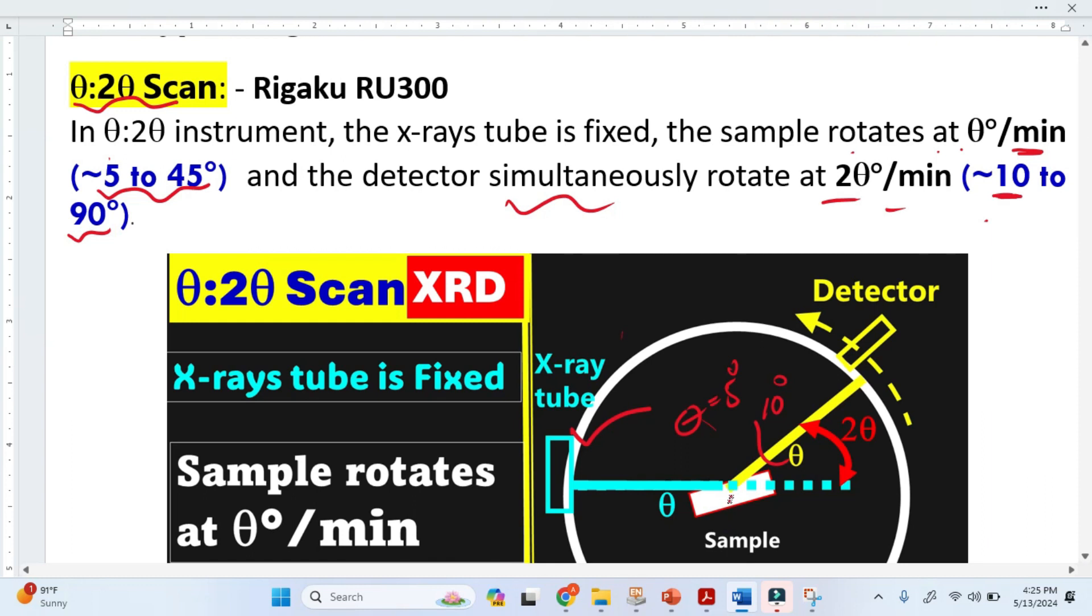When we bring the sample to 45 degrees, the detector will be at 90 degrees. This is the 2 theta angle, from the transmitted beam to the detector.